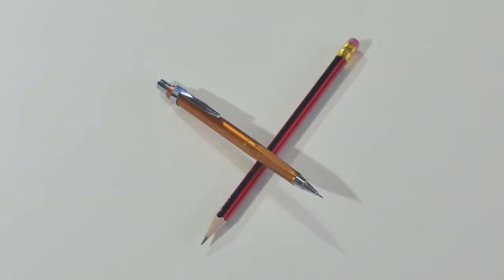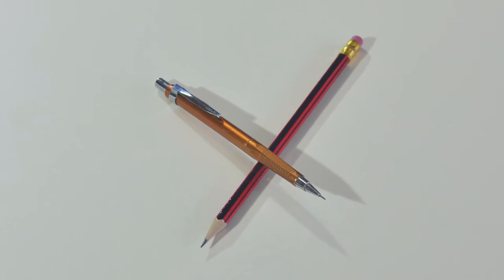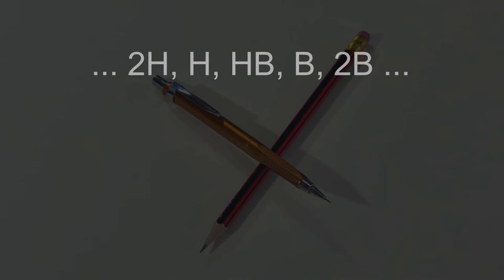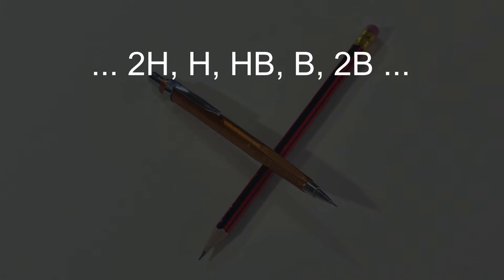Let's start with the most basic, which is the pencil. Pencils are graded by hardness. For instance, an HB pencil will draw a medium dark line, while an H pencil will draw a lighter line, and a 2H pencil will draw an even lighter line.